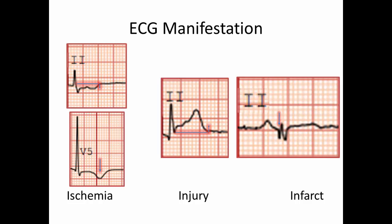Before we delve into details, let's briefly go through the definitions of each of these ECG diagnoses. Ischemia is defined as ST depression or T wave inversion, injury by ST elevation, and infarct by pathologic Q waves.